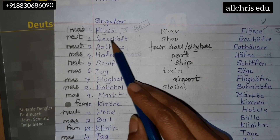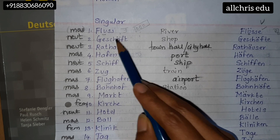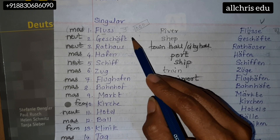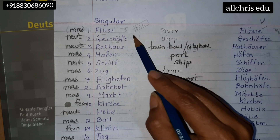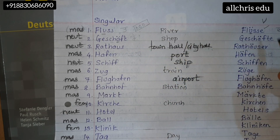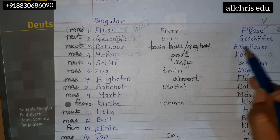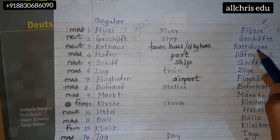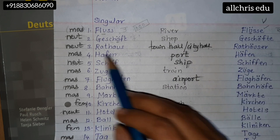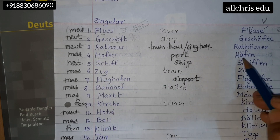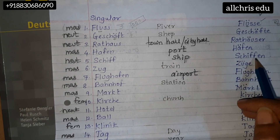Geschäft, Geschäfte. Your 'ä' sound should come like a goat — 'he'. Rathaus, Rathäuser. Hafen, Häfen — 'haa' and 'he'. Schiff, Schiffen.